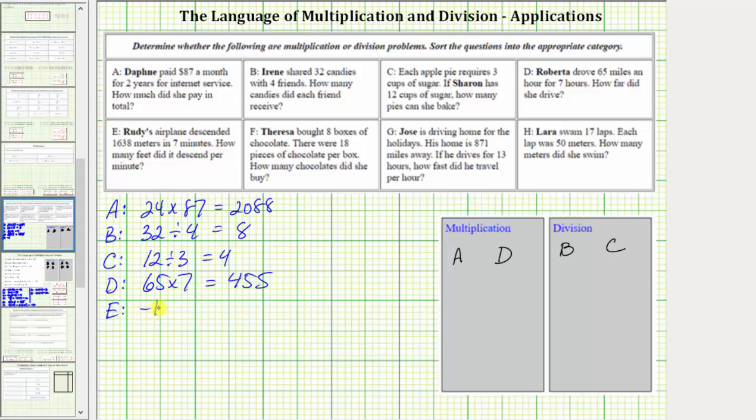We would have negative 1638 divided by seven, which equals negative 234. This negative value represents a descent of 234 meters per minute. We use division. We place E in the division box.